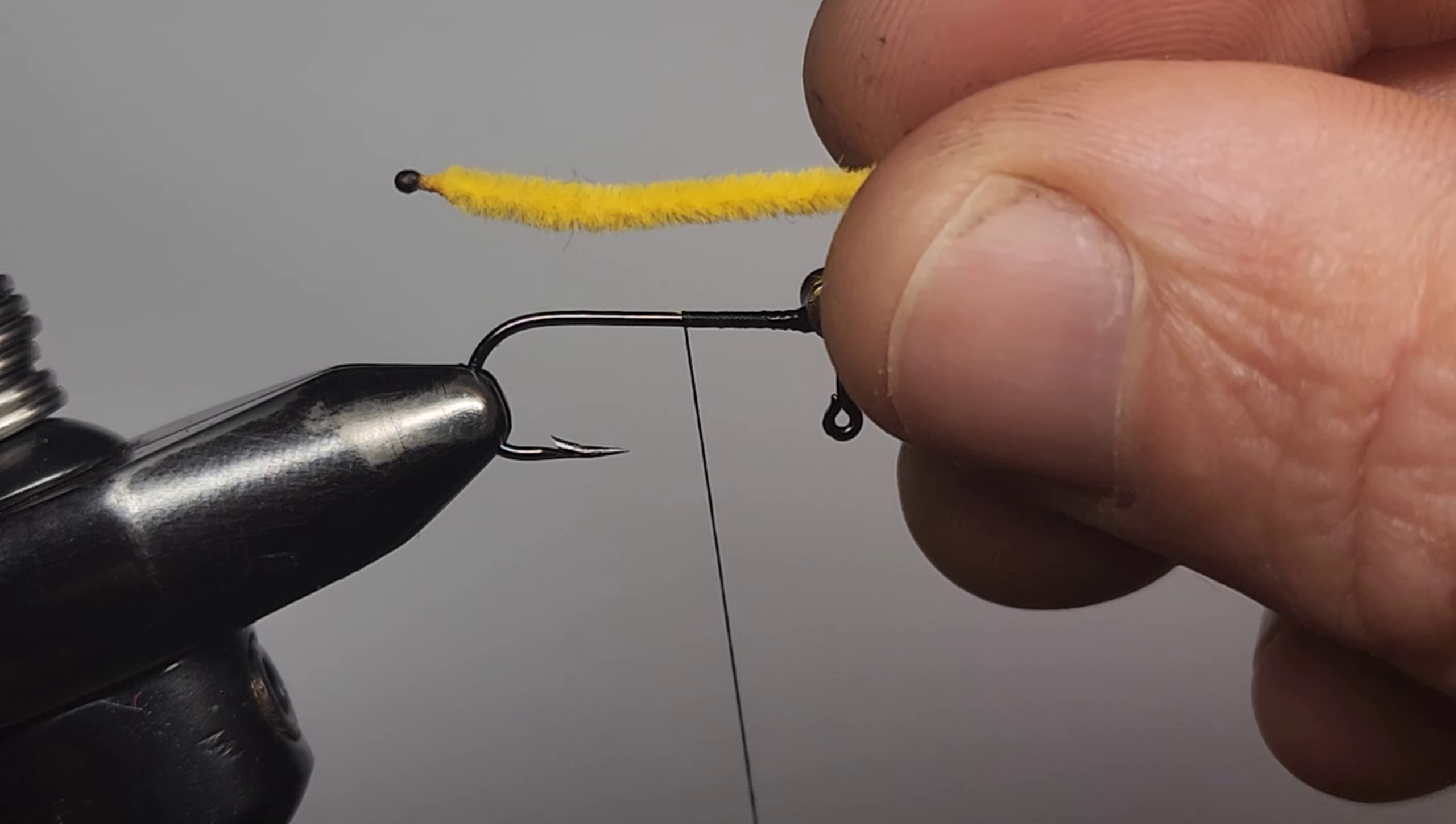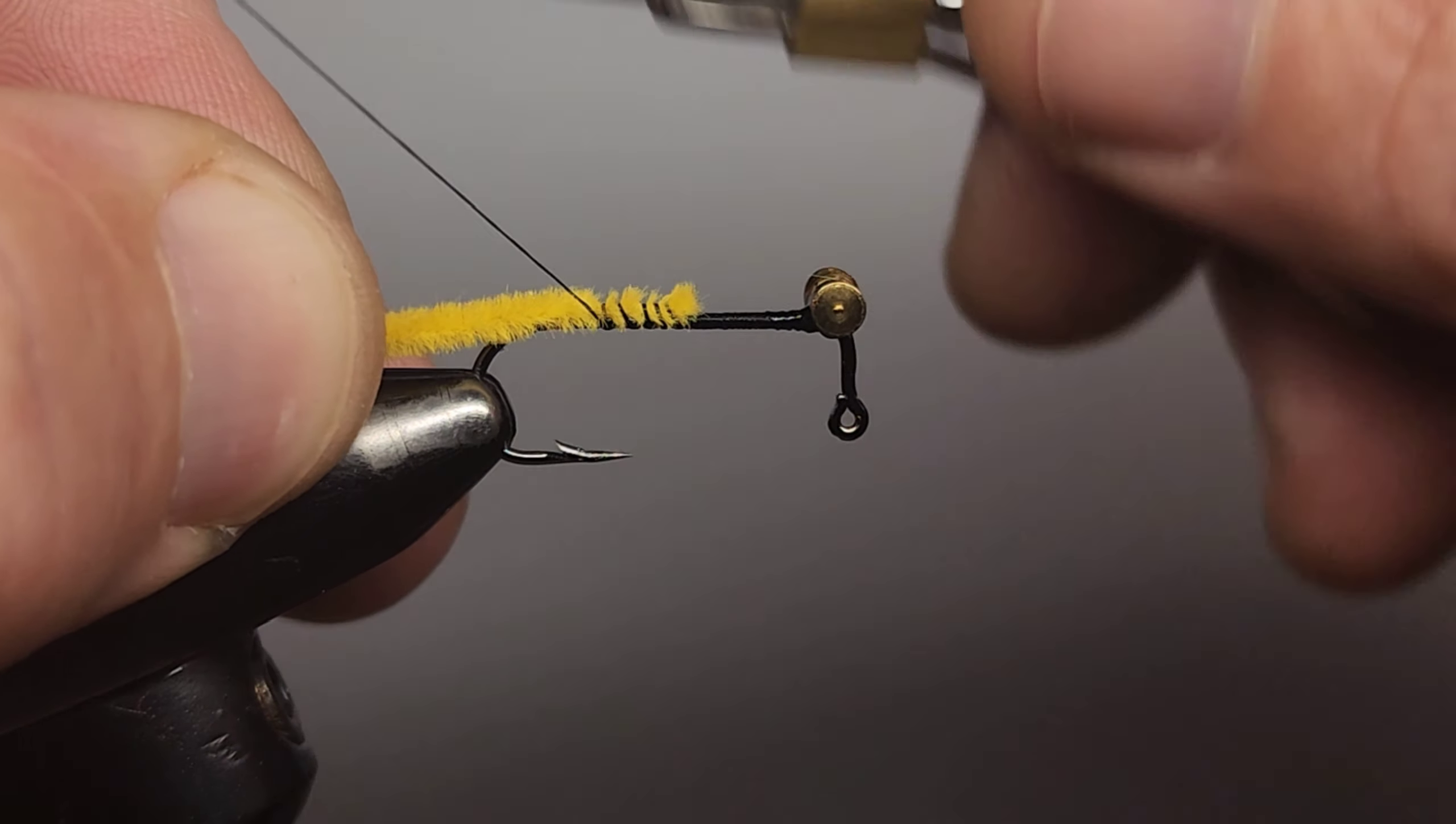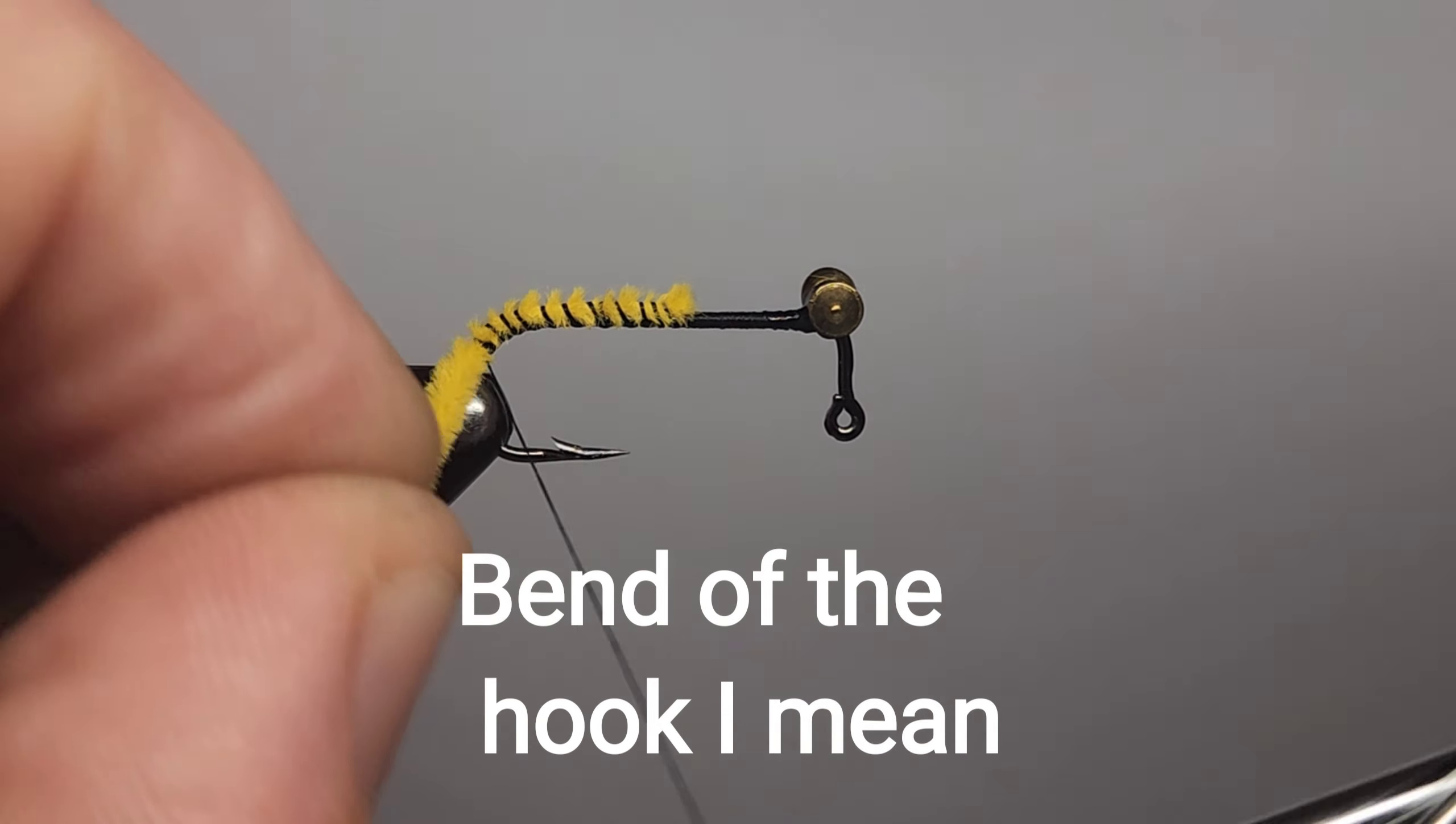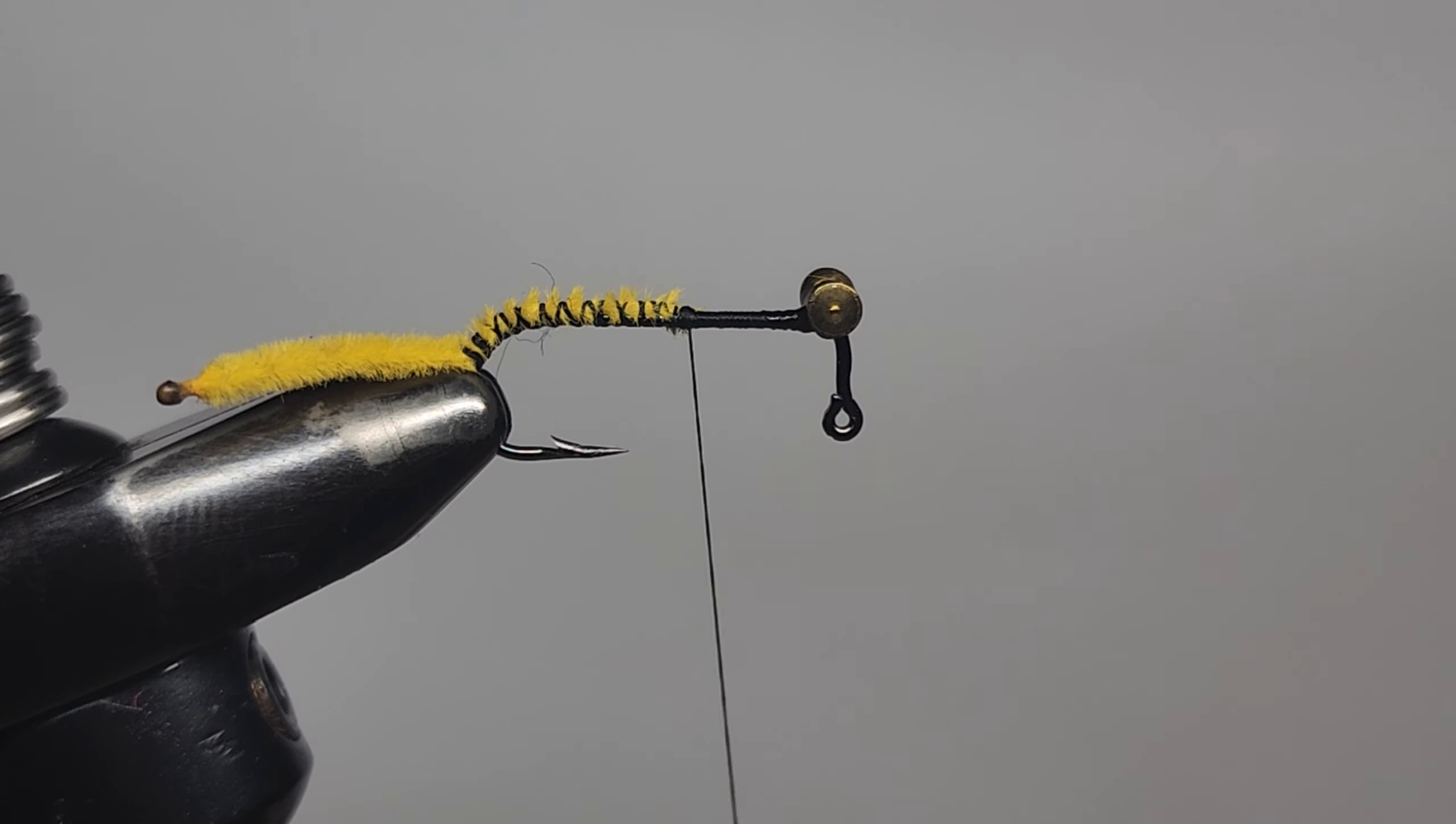The next step is to add some yellow chenille. Burn the end with a lighter. Come to the middle of your hook and just secure that in on top of the hook. Now when we wrap this in, we want to come about halfway down that hook shank and that'll just make it poke up when it's sitting on the lake bed.